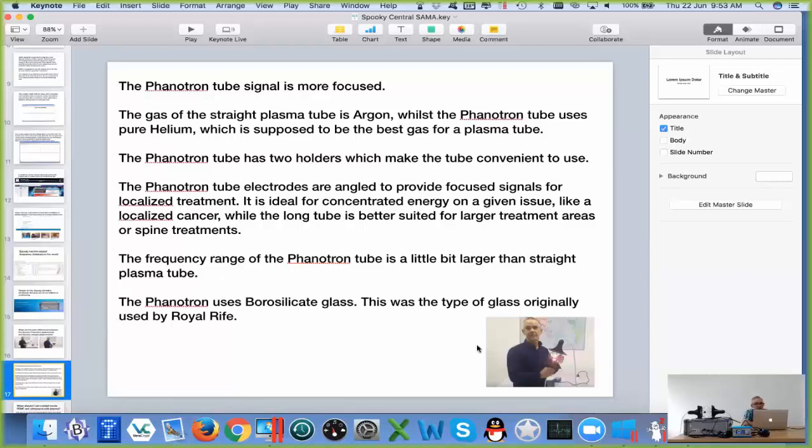Now the Phenatron tube has two holders, the two black things either side. They make the tube easy to handle. If you place the tube onto a flat surface it won't roll because it has flat edges. It also keeps the tube from touching the desk, keeping it about four or five millimeters up from the surface.